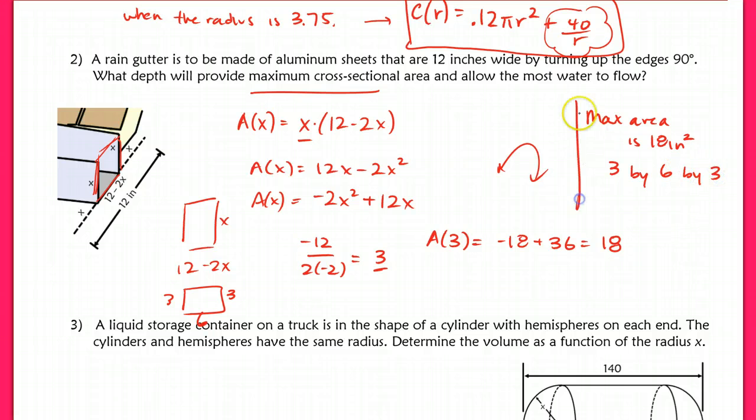And this is the answer to question 2. I don't know why I included that last by 3. This is just 3 by 6, so the dimensions of that rectangle that will allow the most water flow.